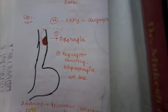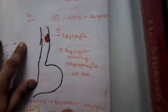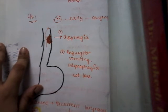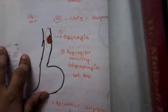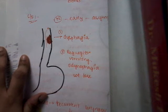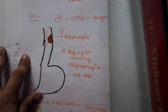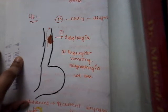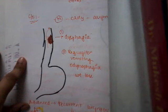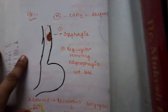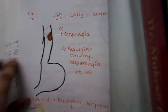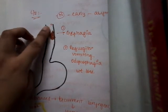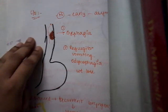Coming to the clinical features seen in carcinoma of esophagus: early carcinoma of esophagus is generally asymptomatic, or presents with some diffuse features like a vague feeling of something in the esophagus, or a vague feeling of dysphagia — something stopping food from passing through. Whenever a patient presents with symptoms of dysphagia to the OPD, it is quite a late presentation. In late disease, you can also see regurgitation, vomiting, odynophagia due to ulceration, and weight loss.